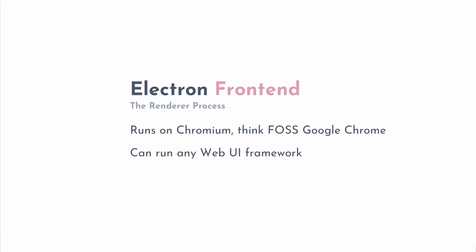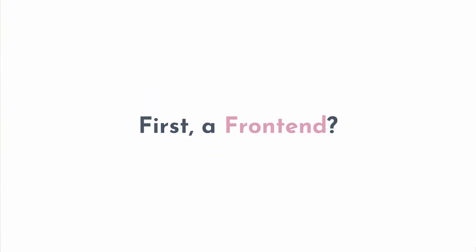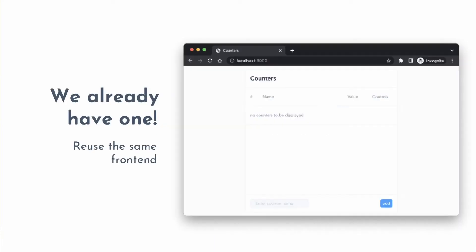The Electron front end runs on Chromium, and because of that it can run any kind of web UI. So whatever runs in the browser runs on the Electron front end, and the backend runs on Node.js — so whatever code your server would be calling can be used by the Electron backend. Since we already have the front end, we use the same thing.